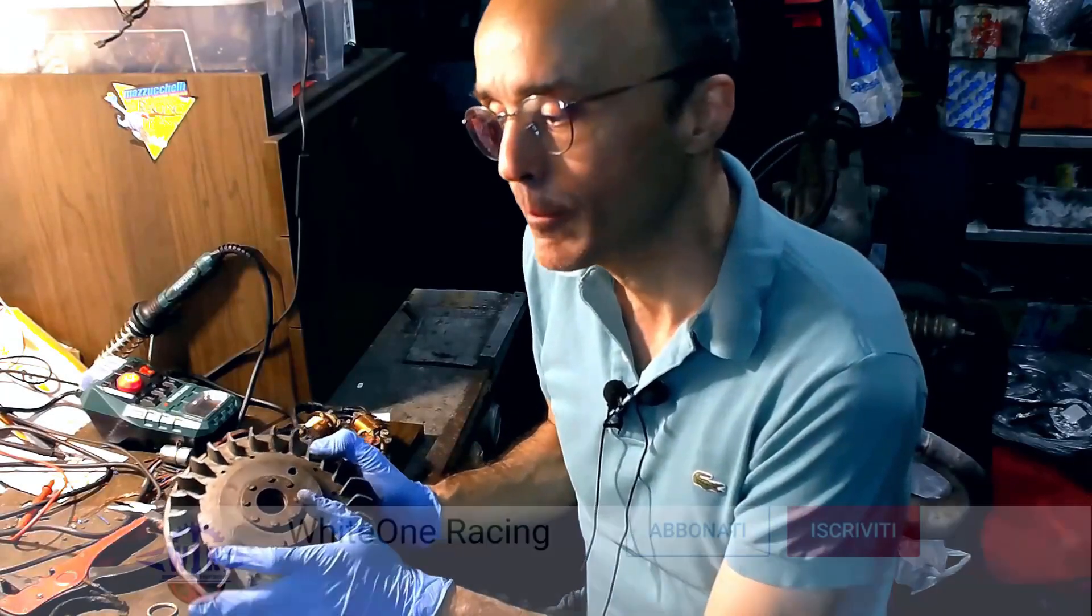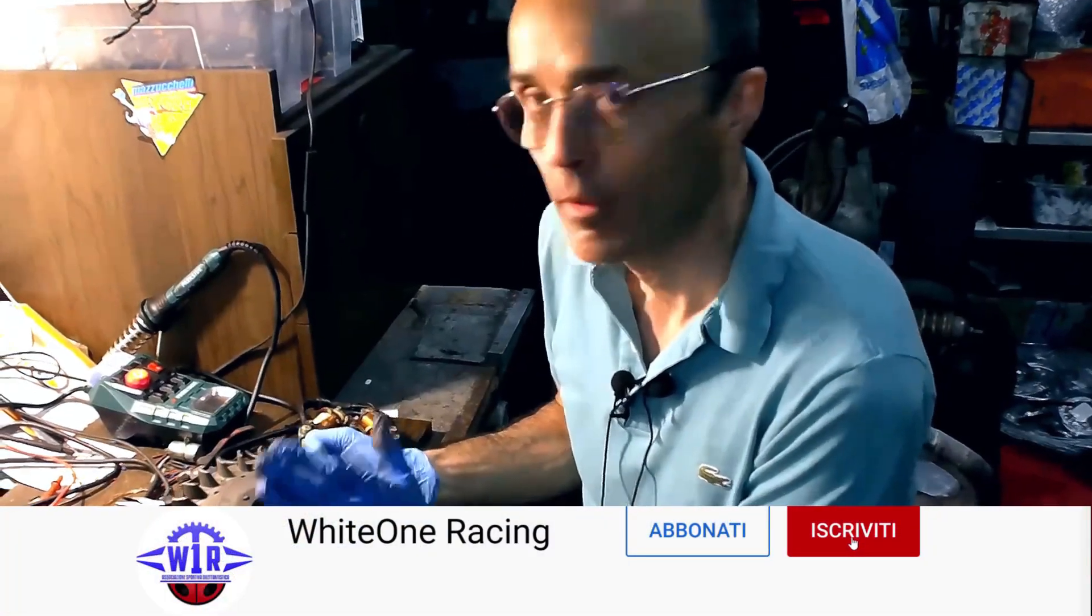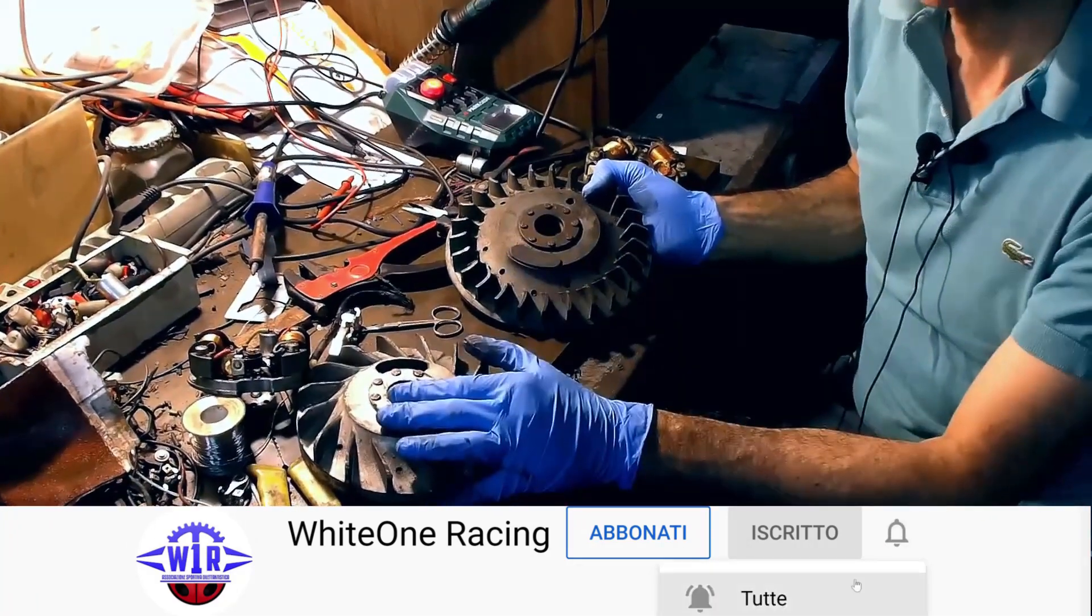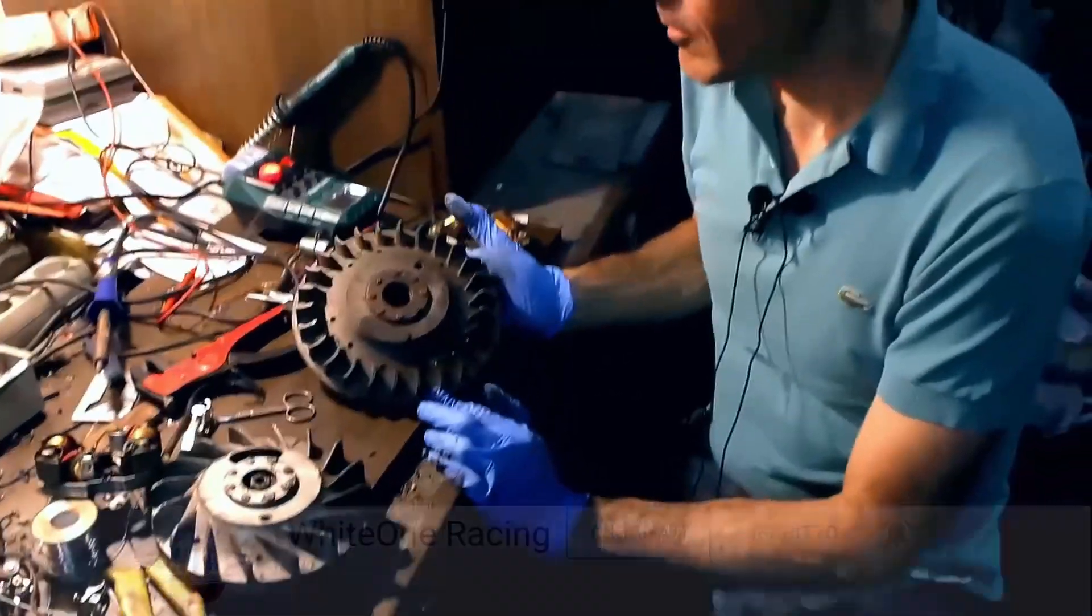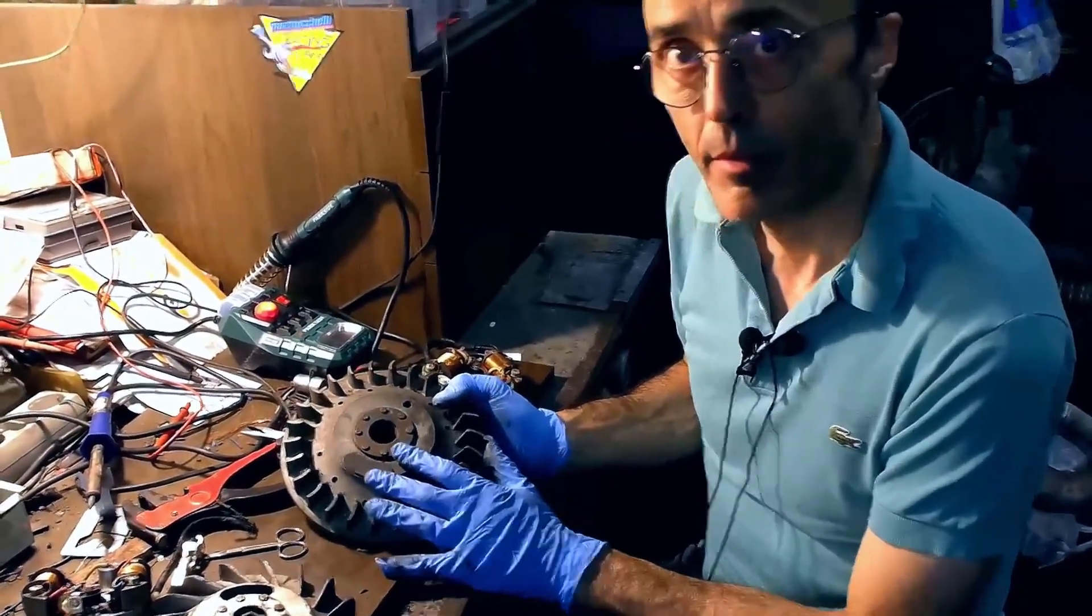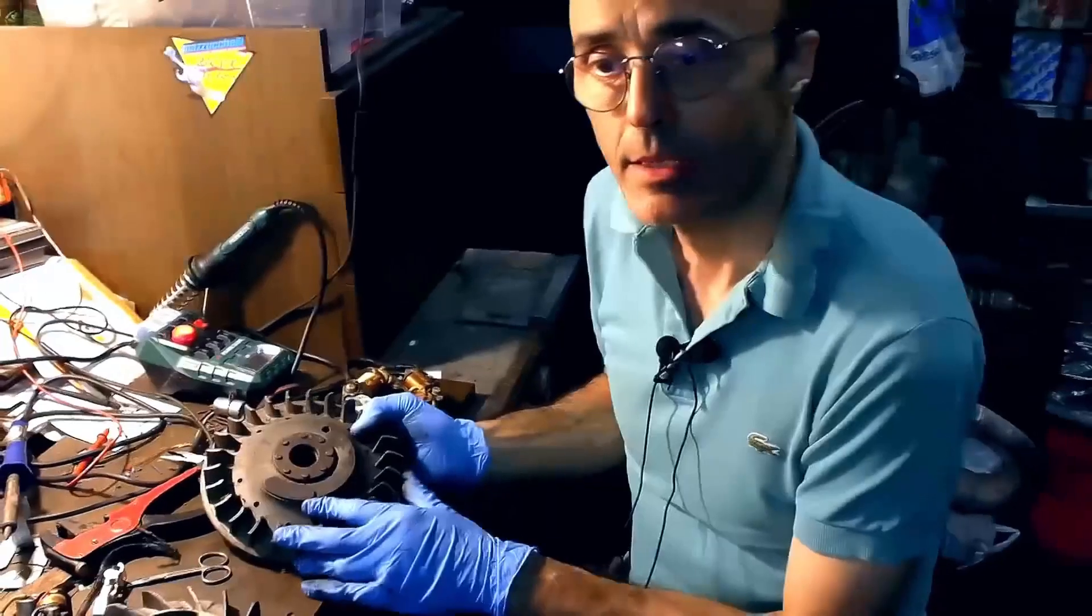So, here we are, dealing with the breaker systems of the small Vespas, Vespa 125 Primavera and Vespa 50 Special. This is the flywheel of the Vespa 125 Spring, which is extremely heavy. Too heavy, by the way.